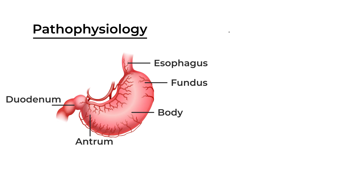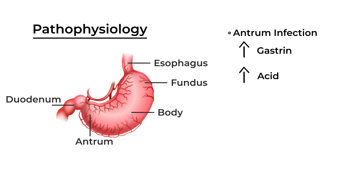If you have an H. pylori infection of the antrum, it causes an increase in gastrin production. Gastrin is a hormone that increases acid, and that can cause ulcers — in particular, ulcers in the duodenum.